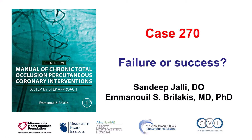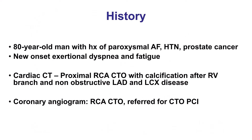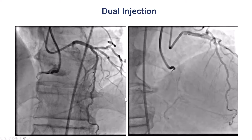This is Andeep Jali and Manos Brilakis presenting case 270 for the Manual of CTO Interventions. This is a case that is unclear whether it was a success or a failure. The patient was an elderly gentleman with multiple comorbidities who presented with exertional dyspnea and fatigue, was found to have a right coronary artery CTO, and his symptoms were considered to be angina equivalent. So he was referred for PCI of the right coronary artery CTO.